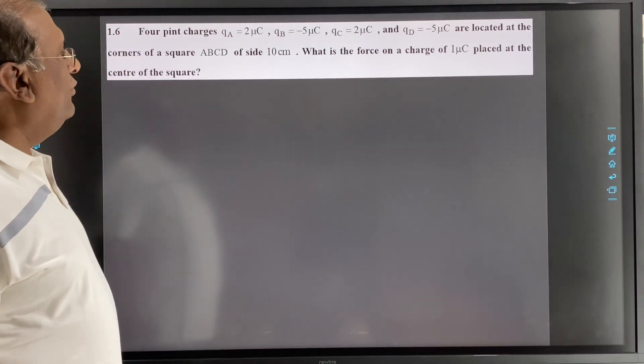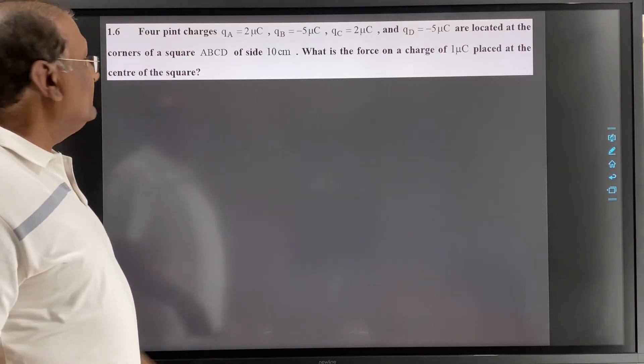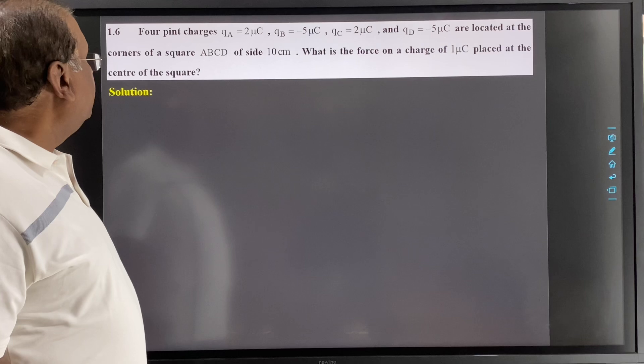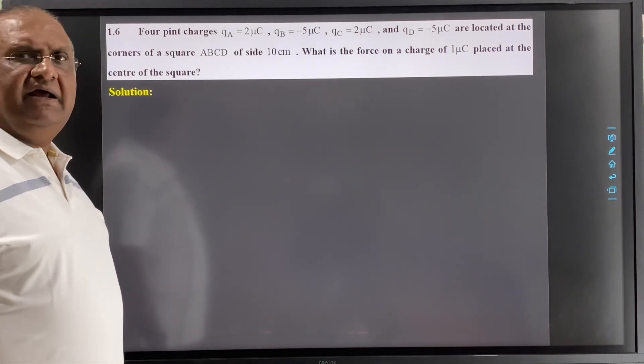and QD = -5 micro coulomb are located at the corners of a square ABCD of side 10 cm. What is the force on a charge of 1 micro coulomb placed at the center of the square? So now let's see that we have ABCD square.